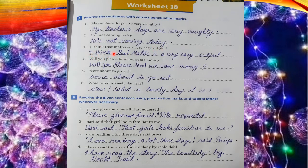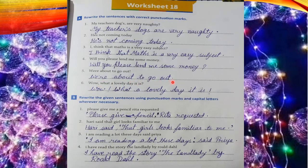Sentence 4: 'Will you please lend me some money?' It's a question sentence, so put a question mark at the end. Sentence 5: 'We're about to go out.' It's a contraction form of 'we are' — write 'We're' with an apostrophe and put a full stop. Sentence 6: 'Wow! What a lovely day it is!' It's an exclamatory sentence — put an exclamation mark after 'Wow' and after 'is', and start 'What' with a capital letter.